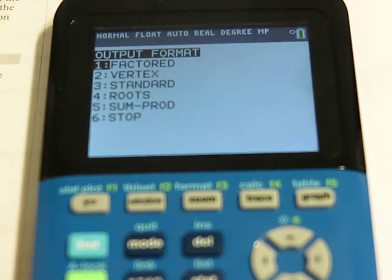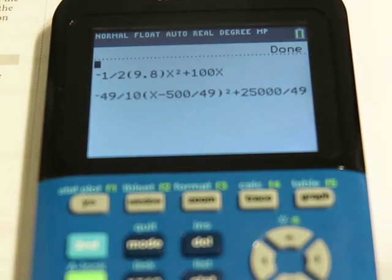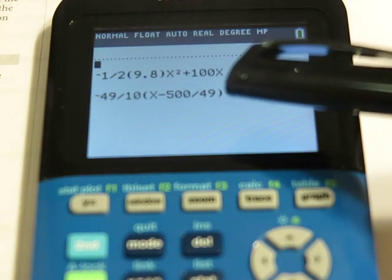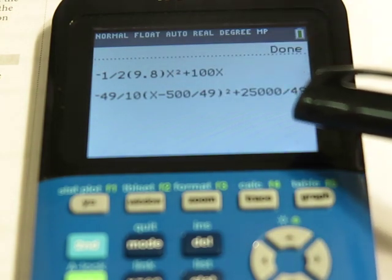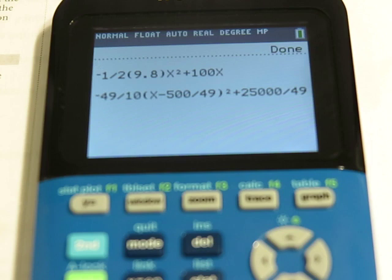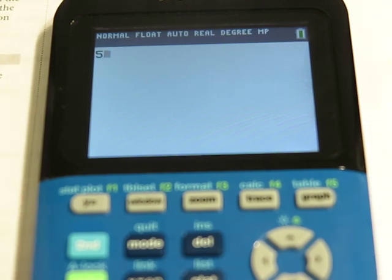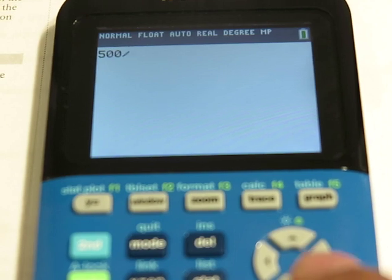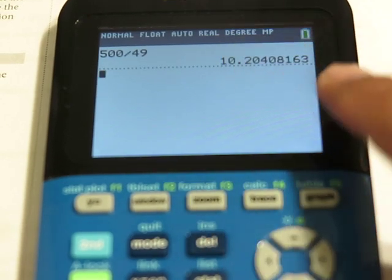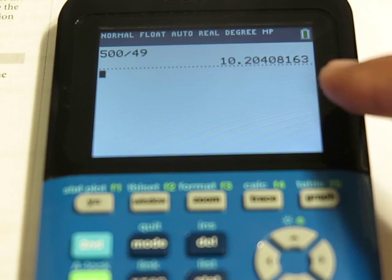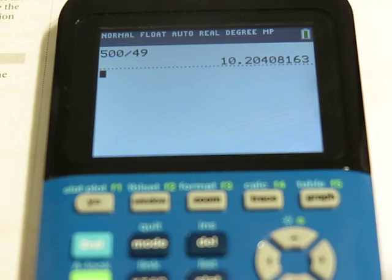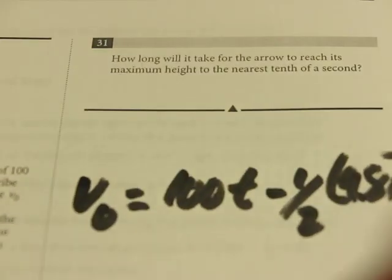Now all I'm going to do is I'm going to put it into the vertex form. So I'm going to go option two. And there you have it. It's in the vertex form. The x-coordinate is 500 over 49. The y-coordinate is 2,500 divided by 49. So now all we have to do is put those in. So if I go 500 divided by 49, I get 10.2, and we're supposed to round this to the nearest tenth. So the answer for this would be 10.2.